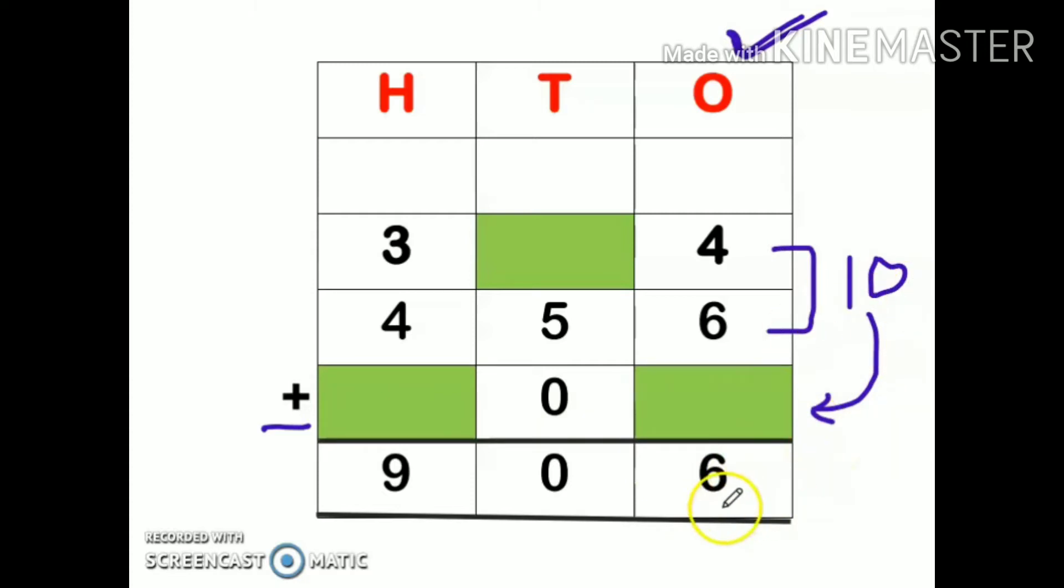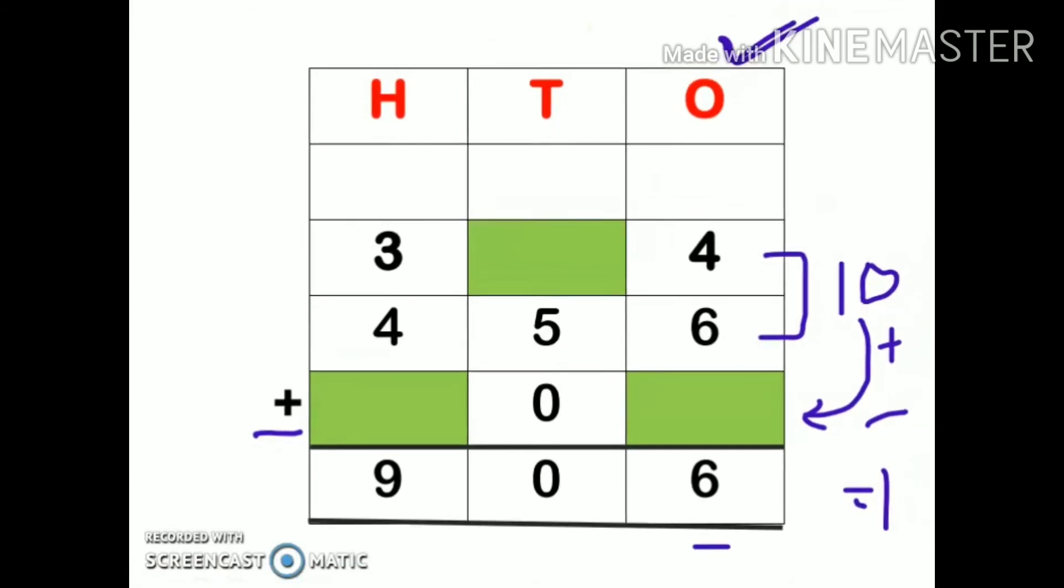As it is a two digit number we cannot get the answer 6, but yes we can get the number where ones place is 6, that is 16 or 26 or 36. So we will take the number which comes first, that is 16. Now 10 is given, I have to add something to 10 so that our answer becomes 16.